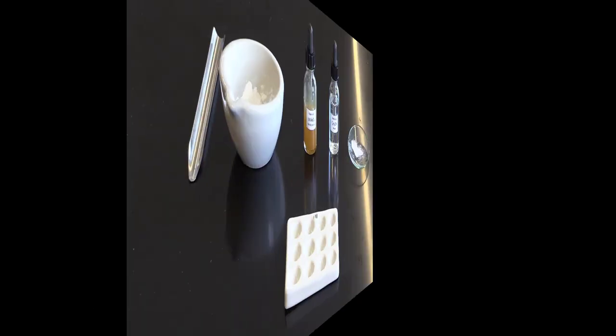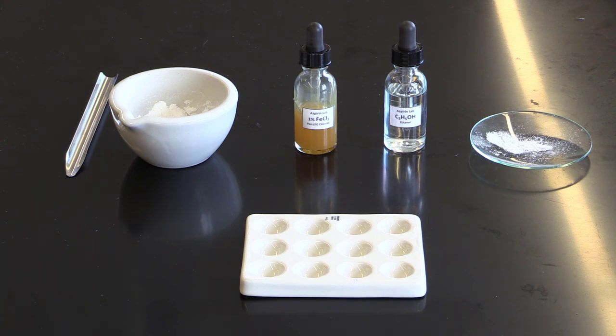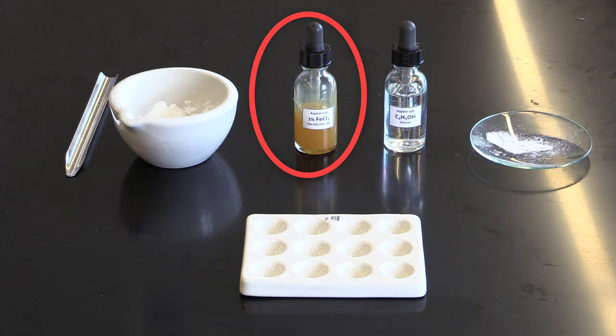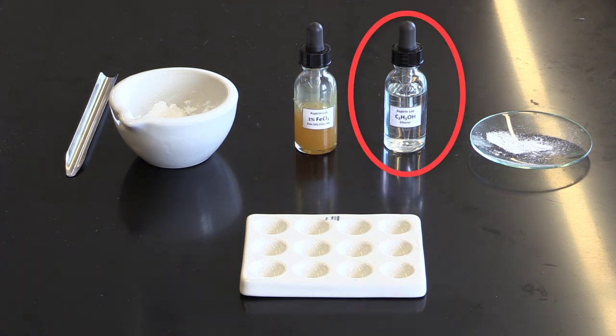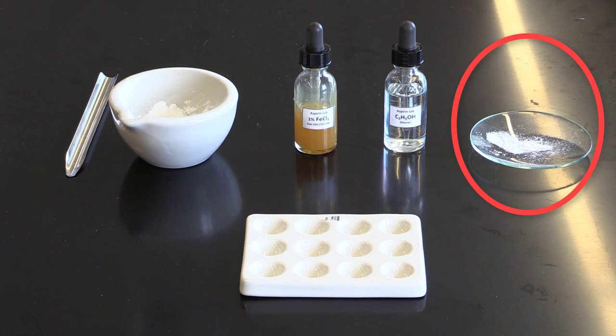Alright, so now let's get started with the test. What we have for this test is our iron 3 chloride and ethanol. The ethanol will be used to solubilize our dried powder aspirin, which is shown in the watch glass.